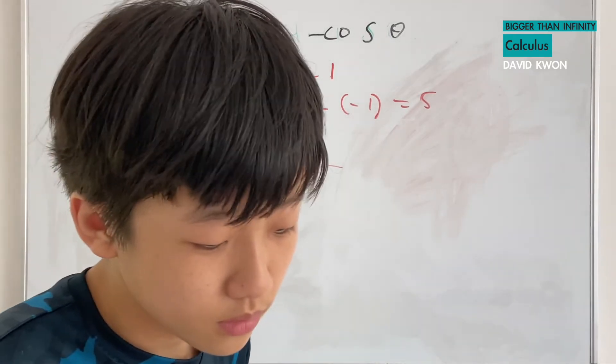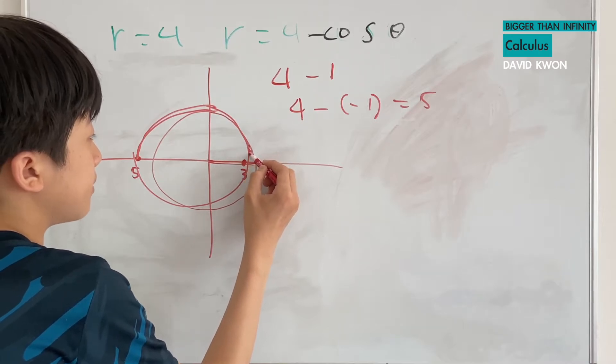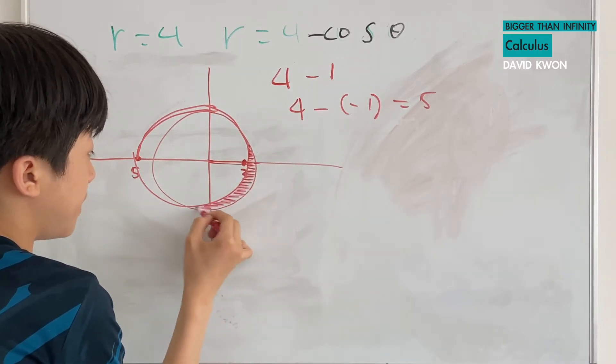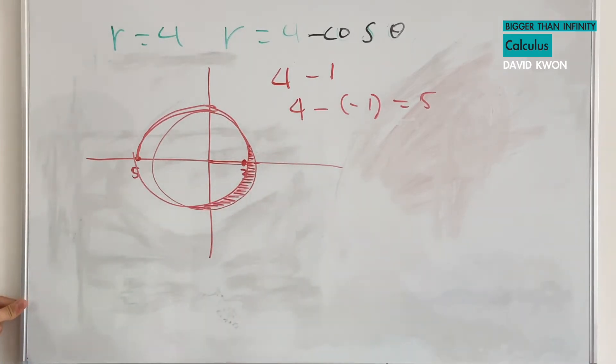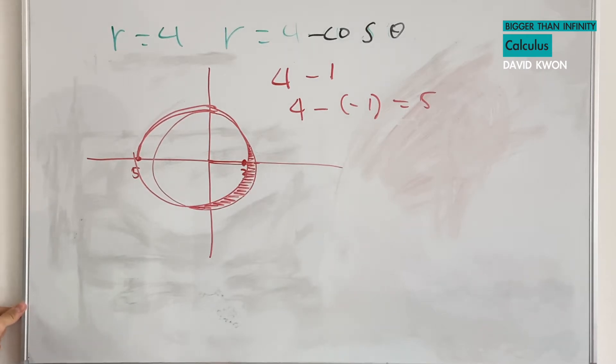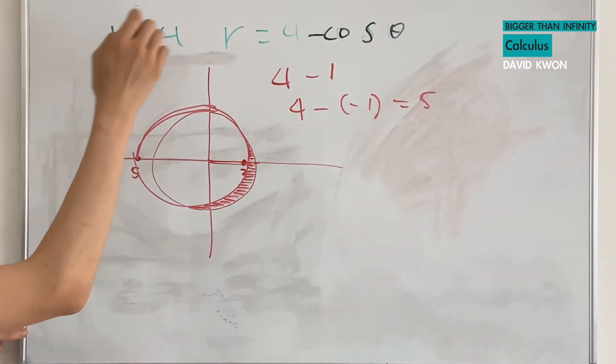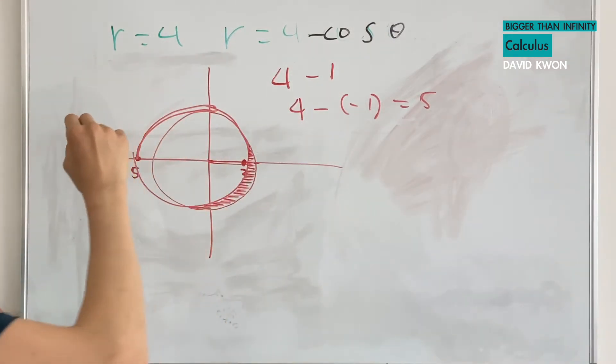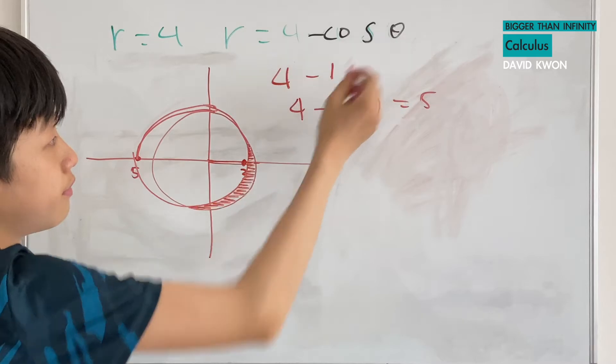And yeah, this is the bounded area that we will solve for, which for us to do that we need to find its interception from r equals 4 and r equals 4 minus cosine theta. So we set them equal to each other and find for the value of theta.